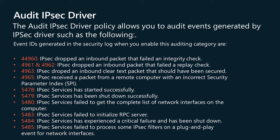The following events will be enabled if you configure auditing through this policy. 4960: IPsec dropped an inbound packet that failed an integrity check. 4961 and 4962: IPsec dropped an inbound packet that failed a replay check. 4963: IPsec dropped an inbound clear text packet that should have been secured. 4965: IPsec received a packet from a remote computer with an incorrect security parameter index (SPI). 5478: IPsec services has started successfully. 5479: IPsec services has been shut down successfully.